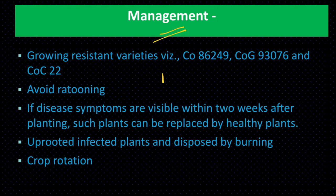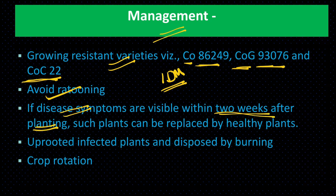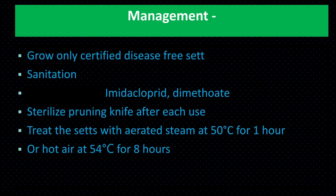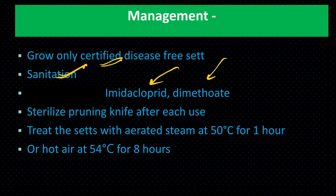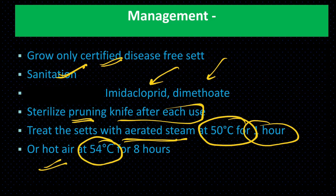Management: adopt integrated disease management. Grow resistant varieties like CO 6926 and COC 22. We should uproot infected plants and destroy by burning. Crop rotation with non-host. Grow only certified disease-free planting material. Maintain field sanitation. Control insect vector by applying imidacloprid or dimethoate. Sterilize pruning knives after each use. Treat planting material with aerated steam at 50°C for 1 hour, or hot air at 54°C for 8 hours.